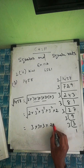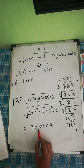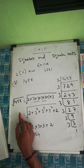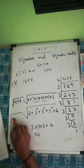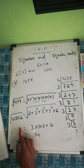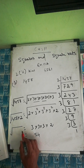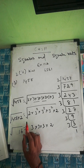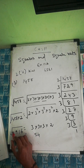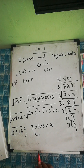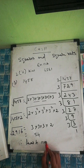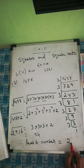Since only one 2 is present and we need a pair, we multiply by one more 2. So 1458 × 2 = 2916. Taking the square root: 2 × 3 × 3 × 3 = 54. Therefore, the least number to multiply is 2, and the resulting perfect square is 2916 with square root 54.